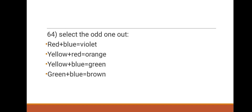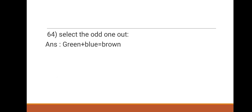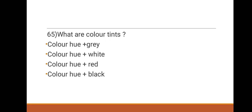Next question: select the odd one out. Options: red plus blue equals violet, yellow plus red equals orange, yellow plus blue equals green, green plus blue equals brown. The odd one out is green plus blue equals brown.